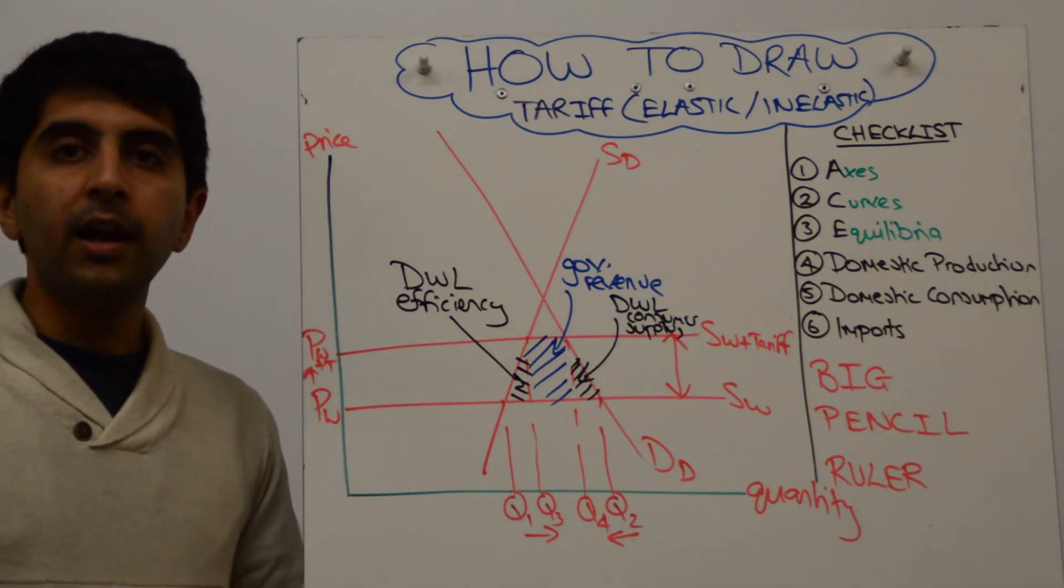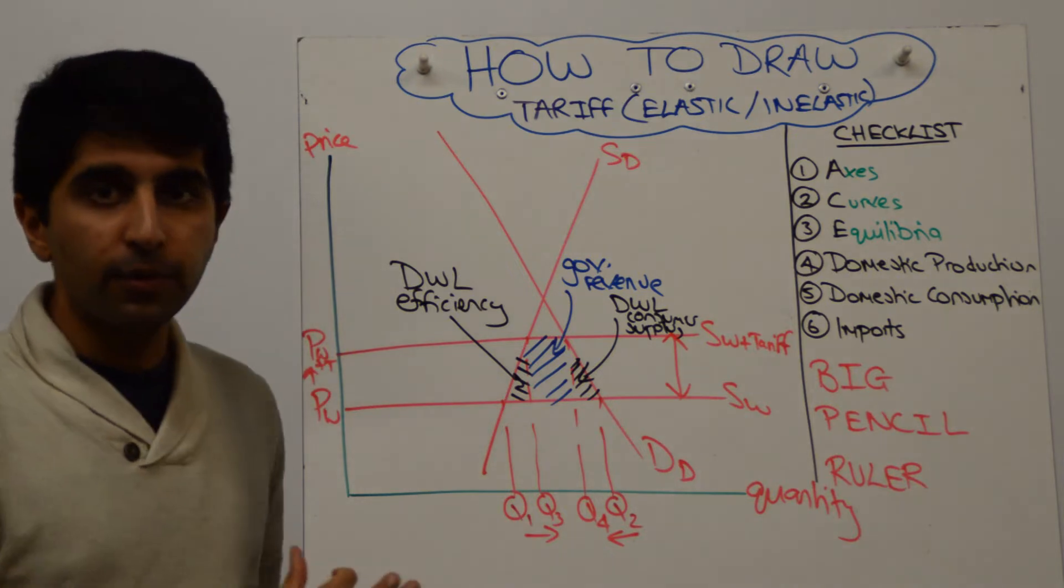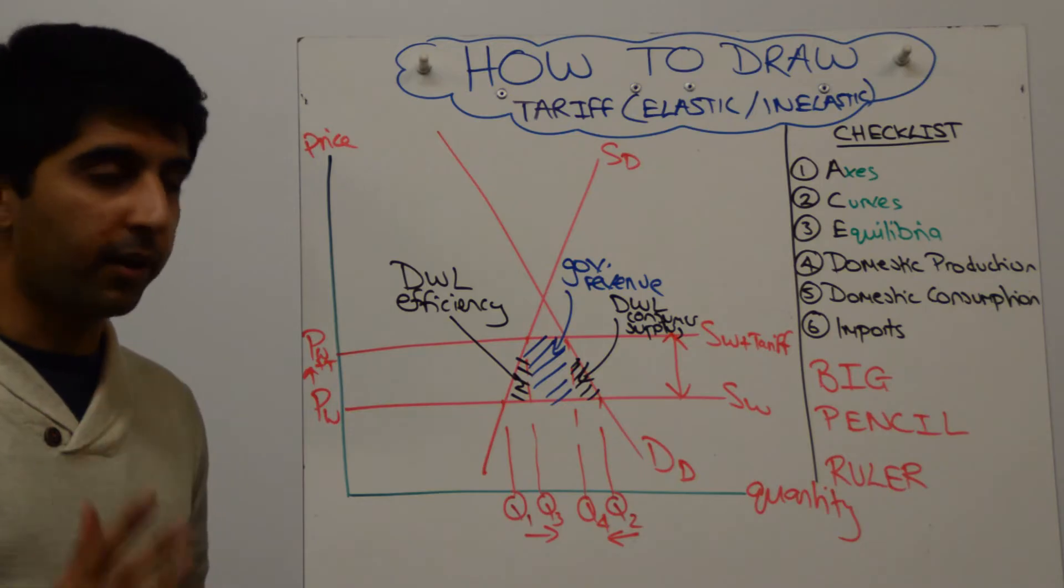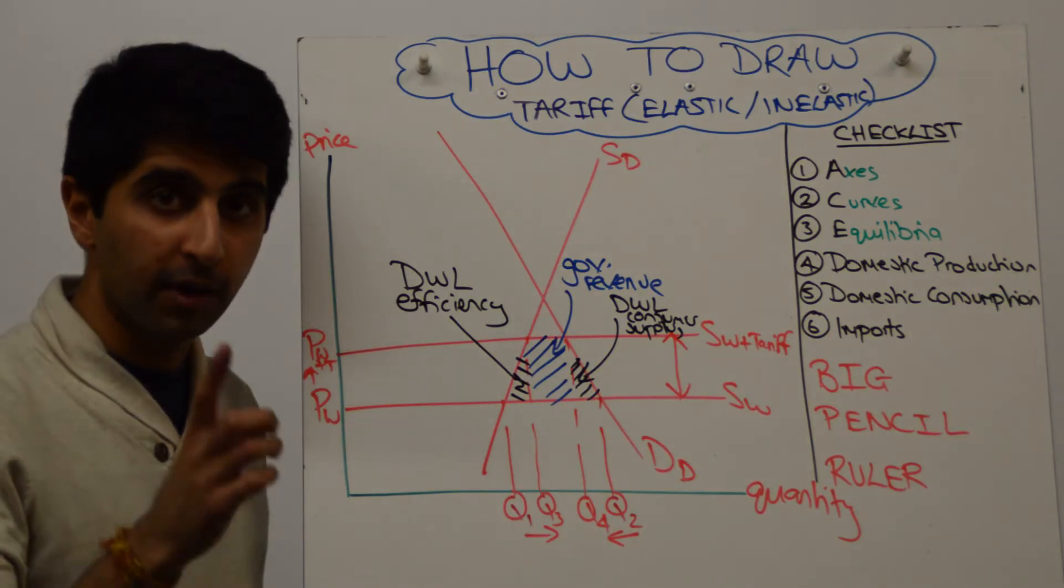All right, so if you want to question the reduction in imports, then you would draw demand, domestic demand, and domestic supply steeper, quite price inelastic, and this will be your diagram. Very powerful.